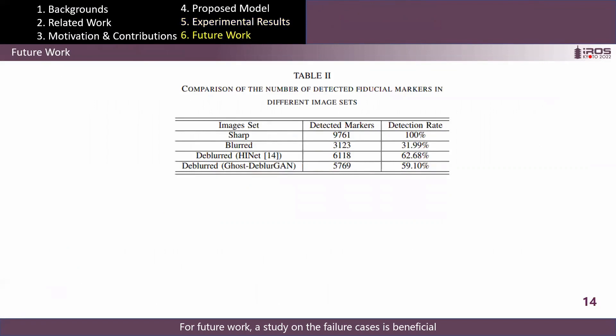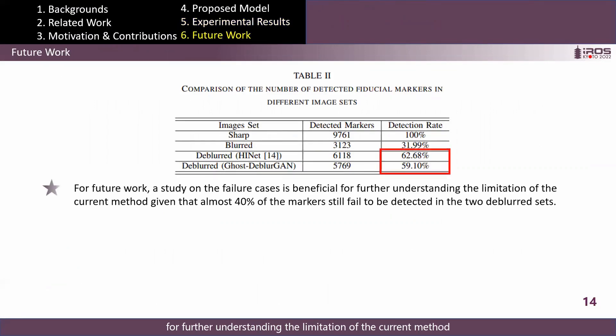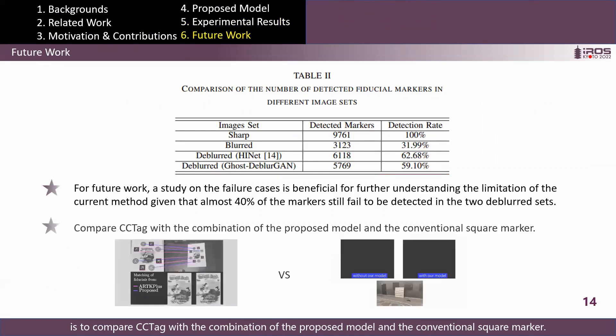For future work, a study on the failure cases is beneficial for further understanding the limitation of the current method, given that almost 40% of the markers still fail to be detected in the two deblurred sets. The other interesting topic is to compare CCTag with the combination of the proposed model and the conventional square marker.